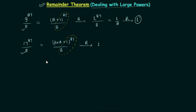Now we will see the proof of this method, but first I will generalize it. If you can express the expression in the form (bx + 1) raised to power n, divided by x, then you can directly write down the remainder as 1. You have to remember this.